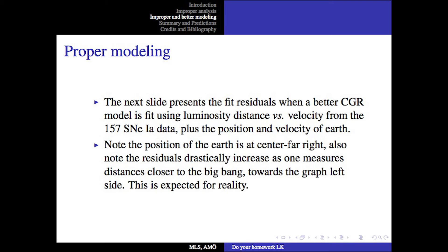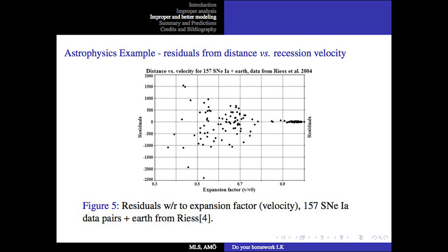Proper modeling. The next slide presents the fit residuals when a better Carmeli general relativity model is fit using luminosity distance versus velocity from the very same 157 supernova data, plus the position and velocity of the Earth. Note, the position of the Earth is at center far right. Also note, the residuals drastically increase as one measures distance closer to the Big Bang, toward the left-hand side of the graph. This is expected for reality. And here we have the plot. Notice at the far right, the residuals of nearby supernova explosions are really very tiny compared to the residuals calculated as one reaches further back toward the Big Bang, the left-hand side of this plot.